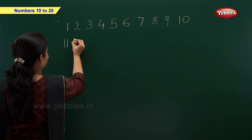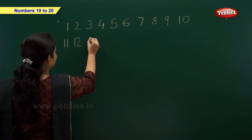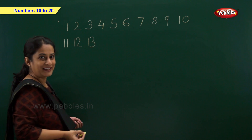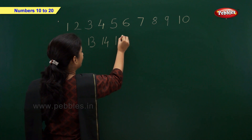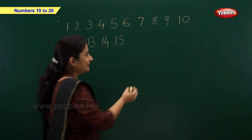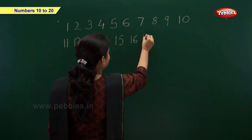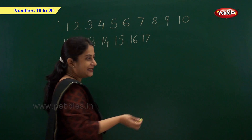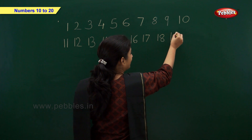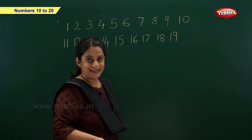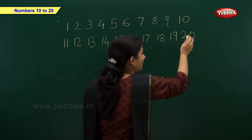11, 12, 13, 14, 15, 16, 17, 18, 19, and 2 and 0 — 20.